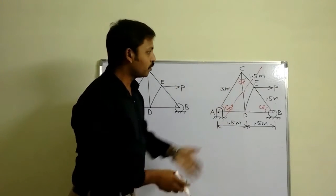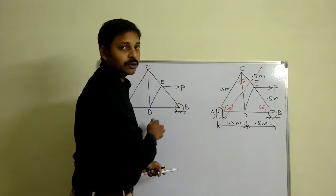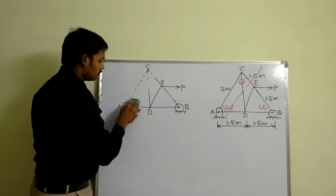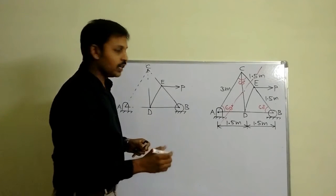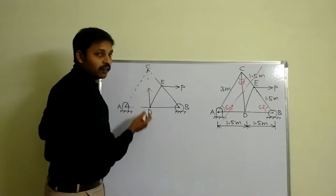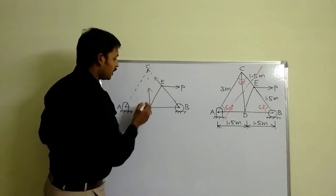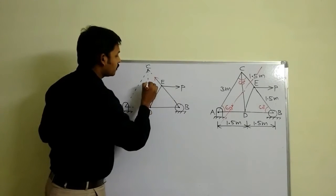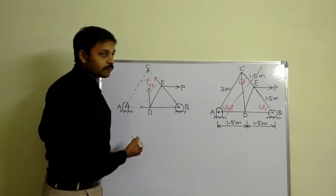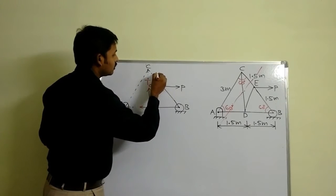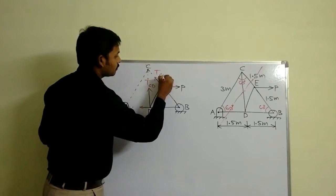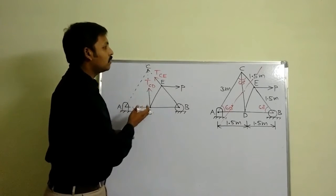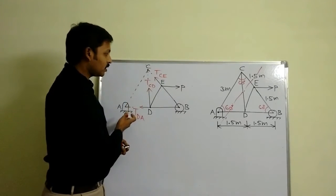Now I am going to eliminate the left-hand side portion — I am going to represent it by means of a dotted line. The members cut by the section line each have an axial force along them. I will consider these as TCD, TCE, and TDA — these are the tensile forces when we cut the given truss by means of this inclined section.